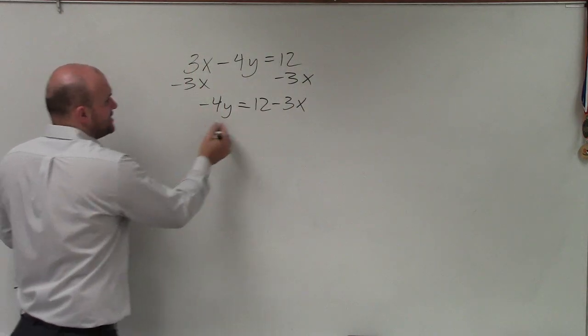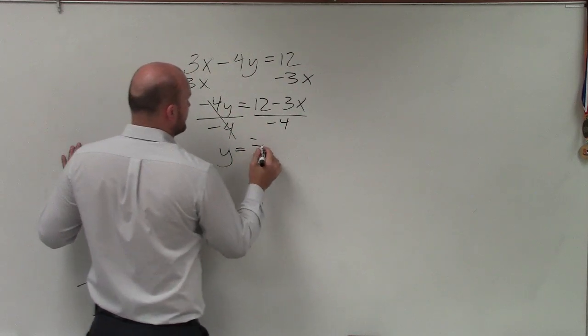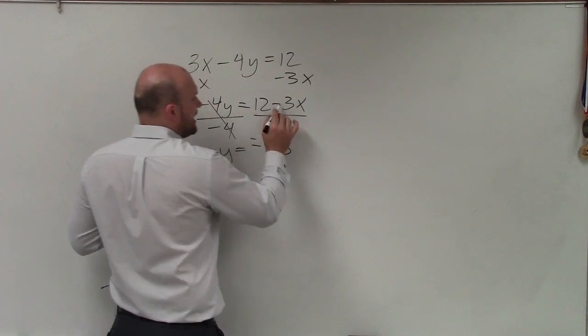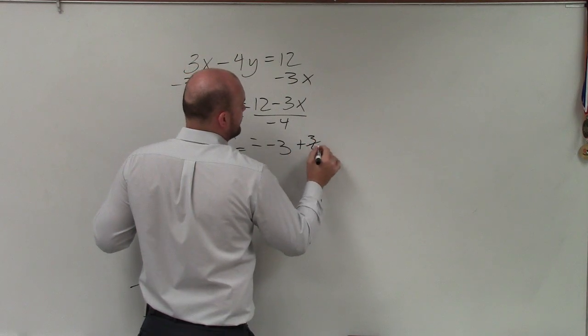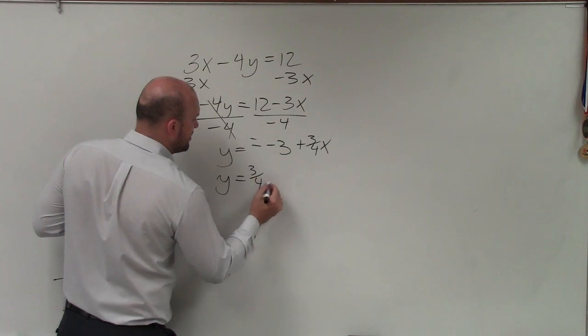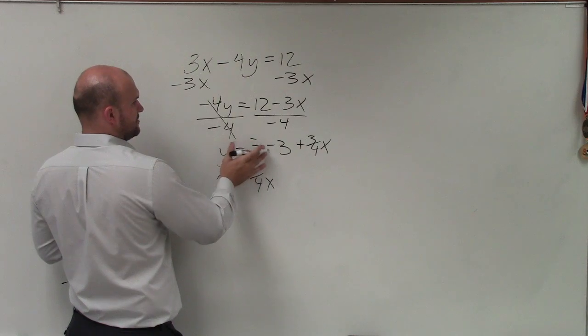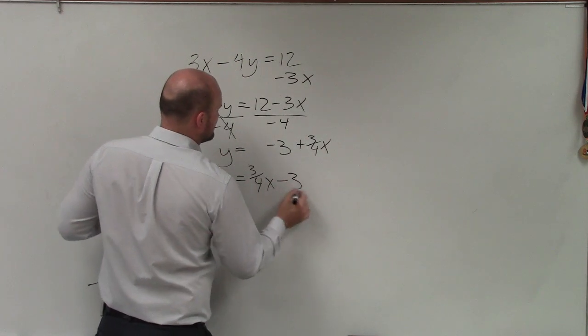Then I undo multiplication by negative 4 by dividing by negative 4. And I have y equals 12 divided by negative 4 is negative 3. And negative 3x divided by negative 4 is positive 3/4x. A lot of times we write this in slope-intercept form as y equals 3/4x minus 3.